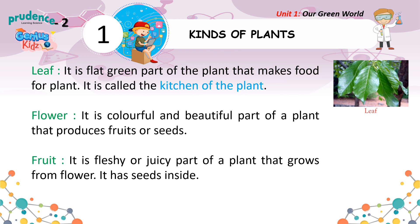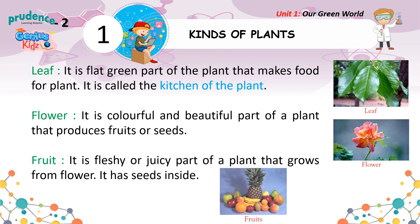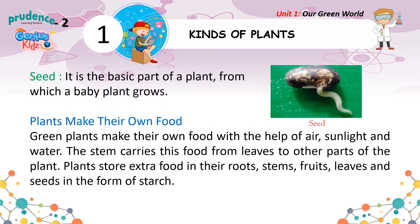Leaf: It is the flat green part of the plant that makes food for the plant. It is called the kitchen of the plant. Flower: It is the colorful and beautiful part of a plant that produces fruits or seeds. Fruit: It is the fleshy or juicy part of a plant that grows from a flower. It has seeds inside. Seed: It is the basic part of a plant from which a baby plant grows.